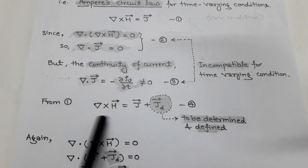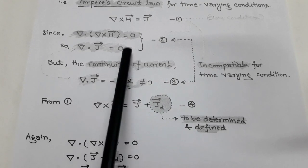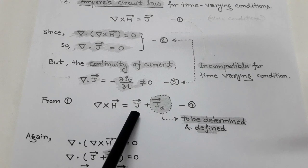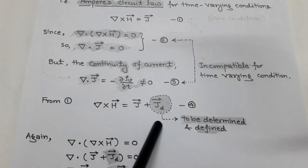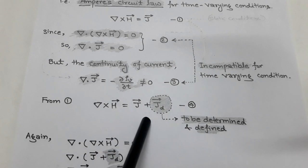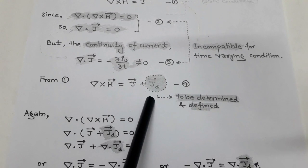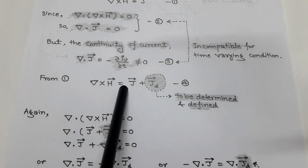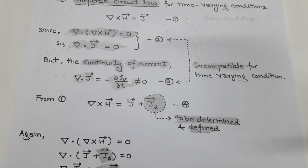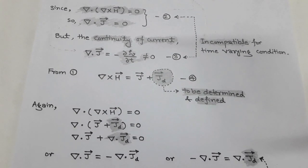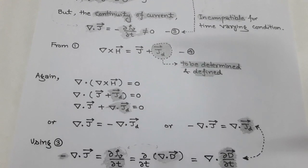So the Ampere's circuital law in static condition is denoted by curl of H vector equals J vector. But this relation cannot be used for time-varying condition. For this, we add some quantity so that it may be compatible with the time-varying condition. So for static condition it is curl of H vector equals J vector, and for time-varying condition, curl of H vector is equal to J vector plus J_d vector. This J_d vector is called displacement current density. So we have to determine this term, that is J_d vector.